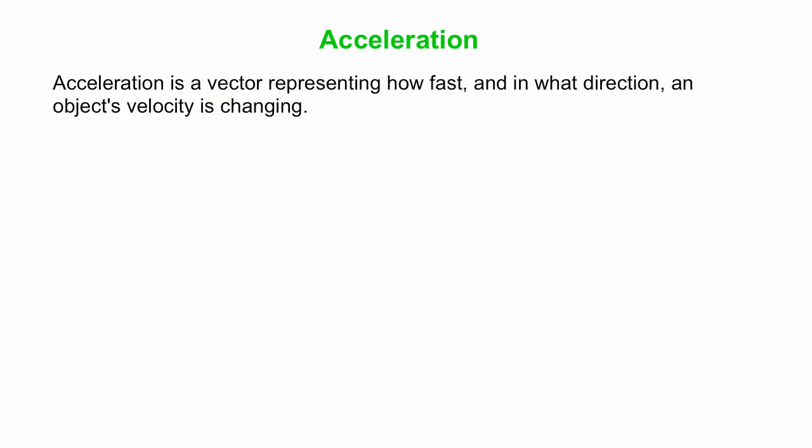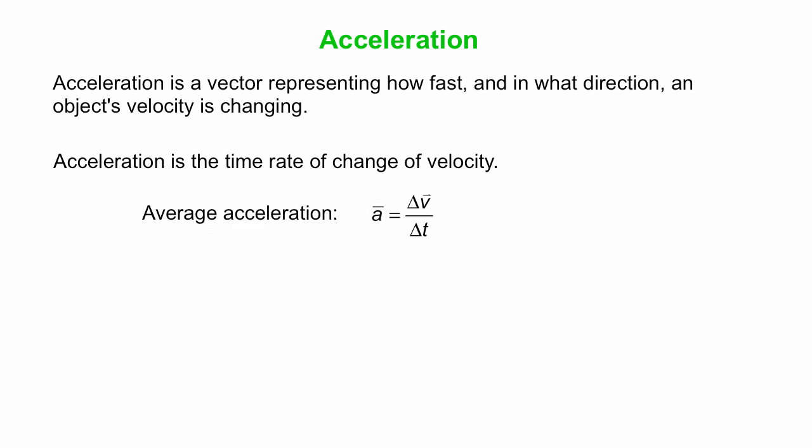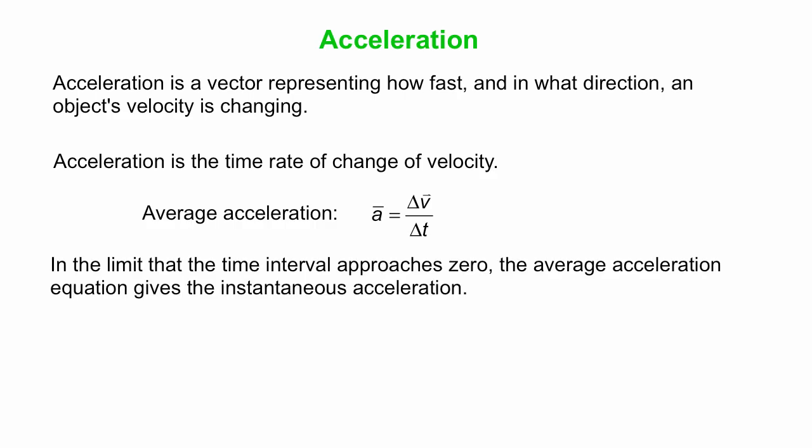So what is acceleration? It's a vector representing how fast and in what direction an object's velocity is changing. In other words, acceleration is the time rate of change of velocity. Here's our equation: average acceleration — A with a bar on top — is delta V over delta T. And in the limit that the time interval approaches zero, the average acceleration gives the instantaneous acceleration.